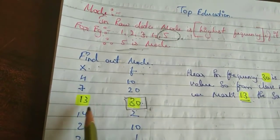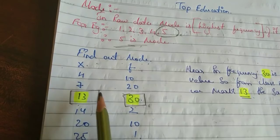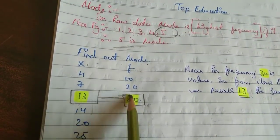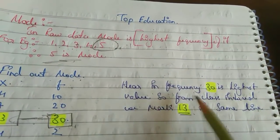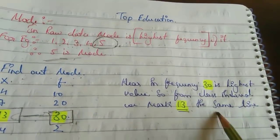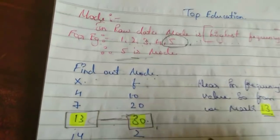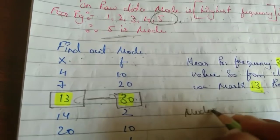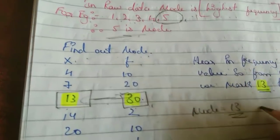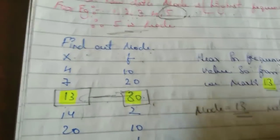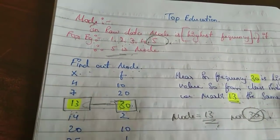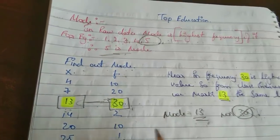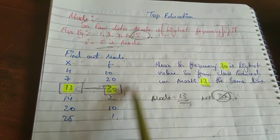And we have marked the below number of it, thirteen, because it lies in same line. So here in frequency that is highest value, so from class interval we mark 13 the same line. So here mode is equal to 13, not 30. So the opposite number will be mode, not that frequency which has. So without formula to find out mode.